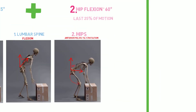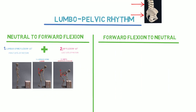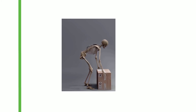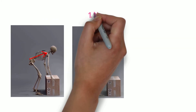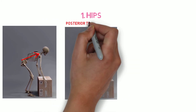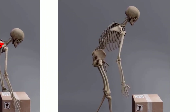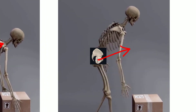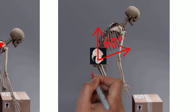Now let's take a look at the flexion to neutral scenario. Coming out from flexion back to neutral, the pelvis will initiate the motion. The pelvis will rotate posteriorly on the femurs in order to get back to neutral, approximately 60 degrees. At this point we notice a large activity of hip extensor muscles.